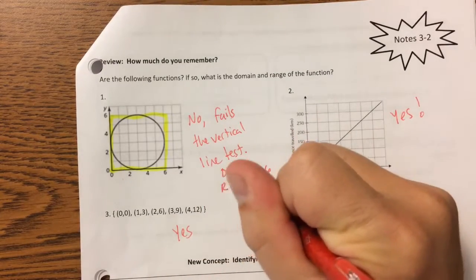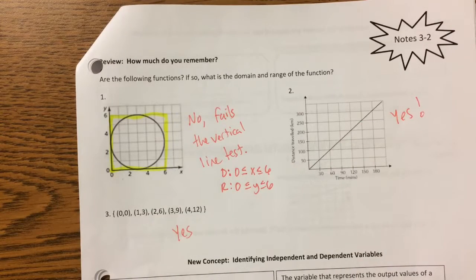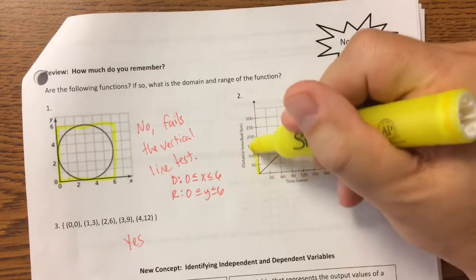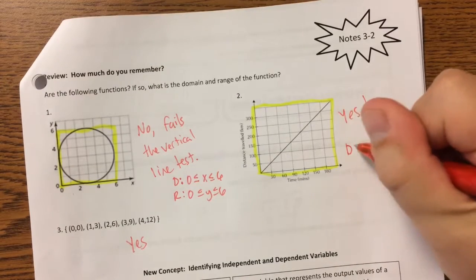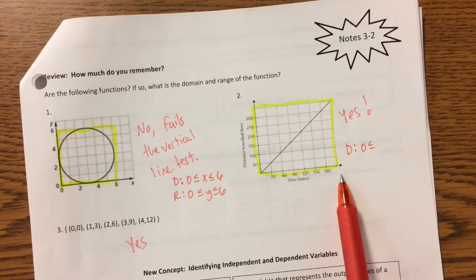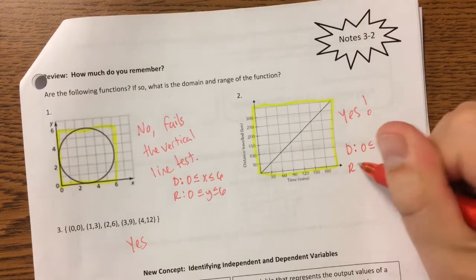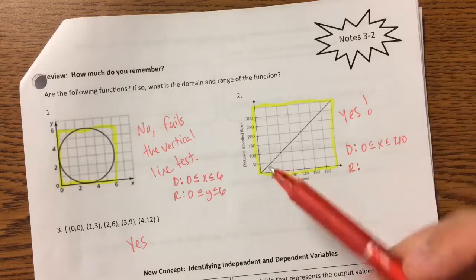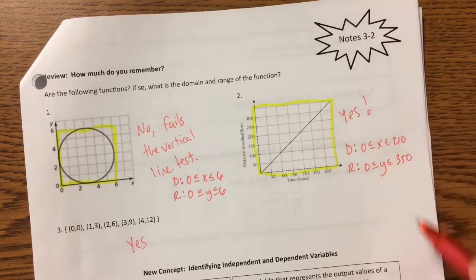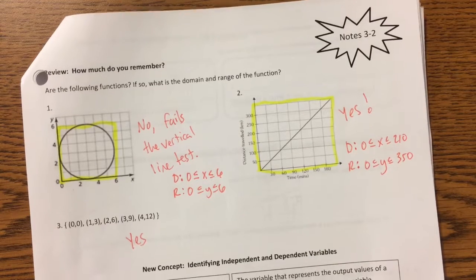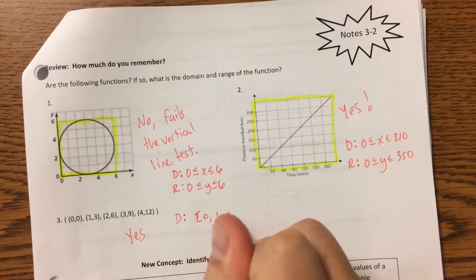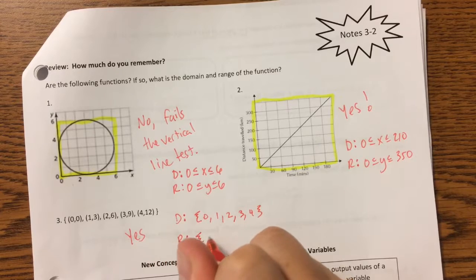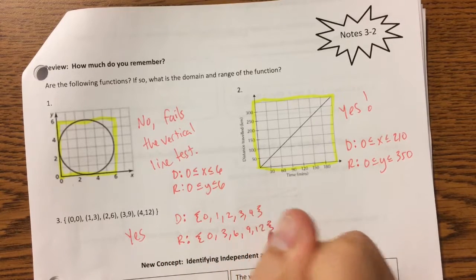For number two, there are no arrows on this line, so we just take what is given. The domain will go from zero to — we're counting by 30s here — so the last one would be 210, and the range would go from zero to 350, counting by 50s. Now in a discrete situation like number three, you write it a little differently — just list out all the numbers. So the domain for number three is 0, 1, 2, 3, and 4, and the range is 0, 3, 6, 9, and 12.